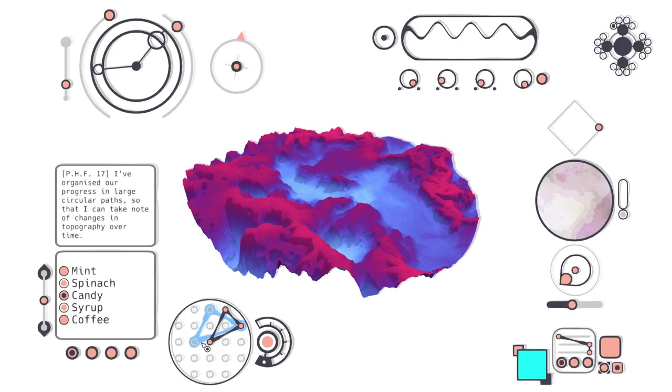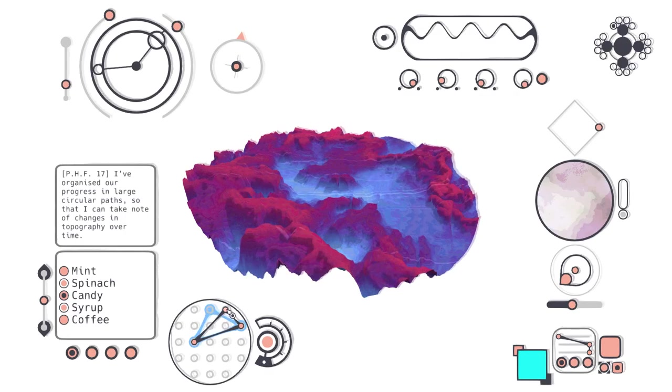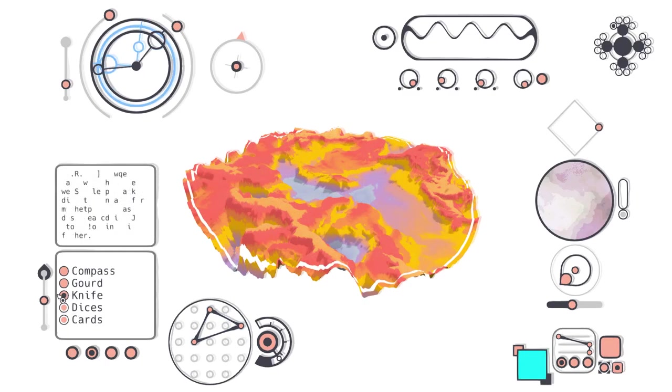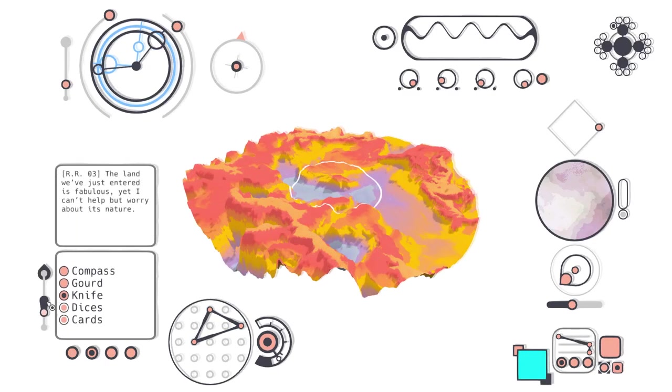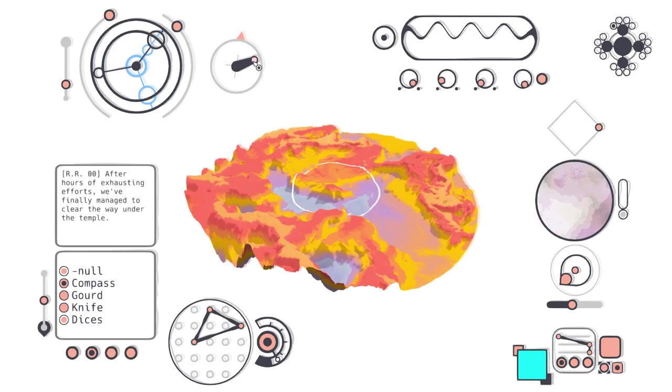Candy. I've organized our progress in large circular paths, so I can take note of changes in our topology over time. Or topography over time. Oh, it's all pretty! How many of these? Interesting.